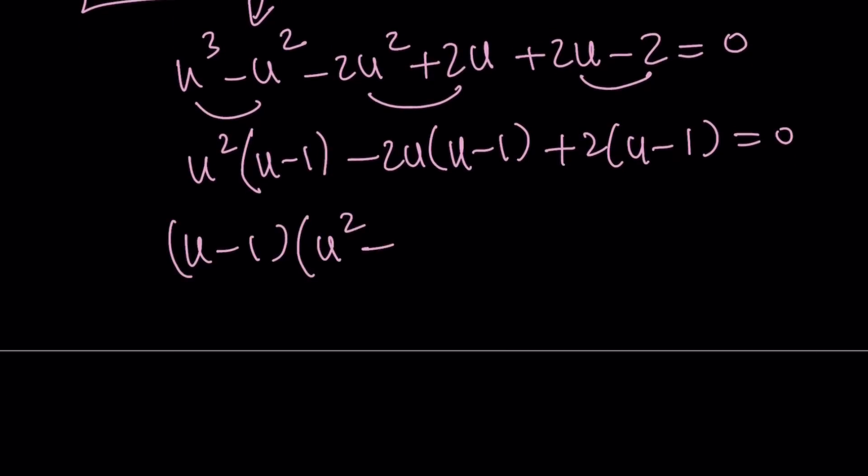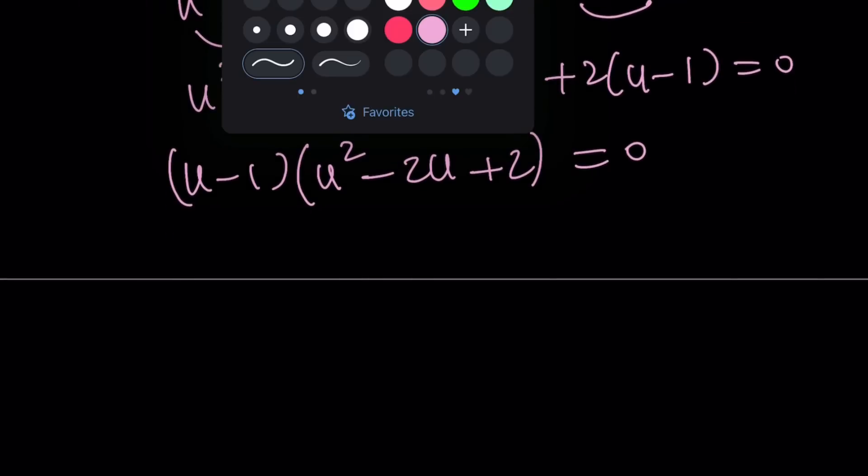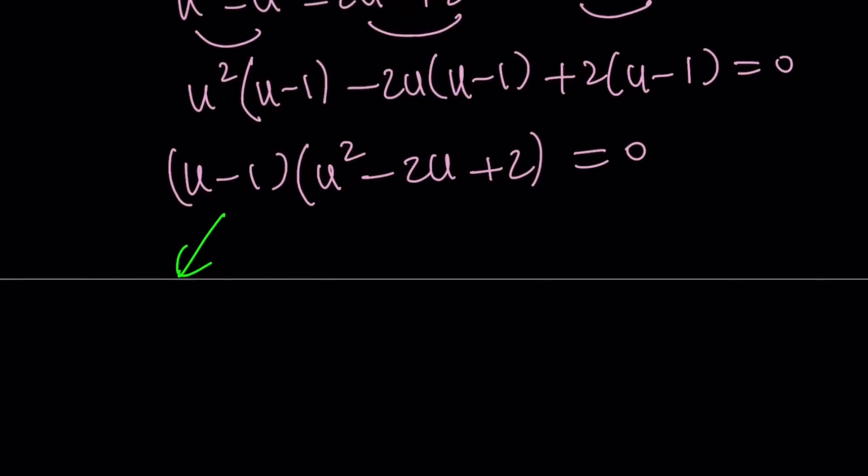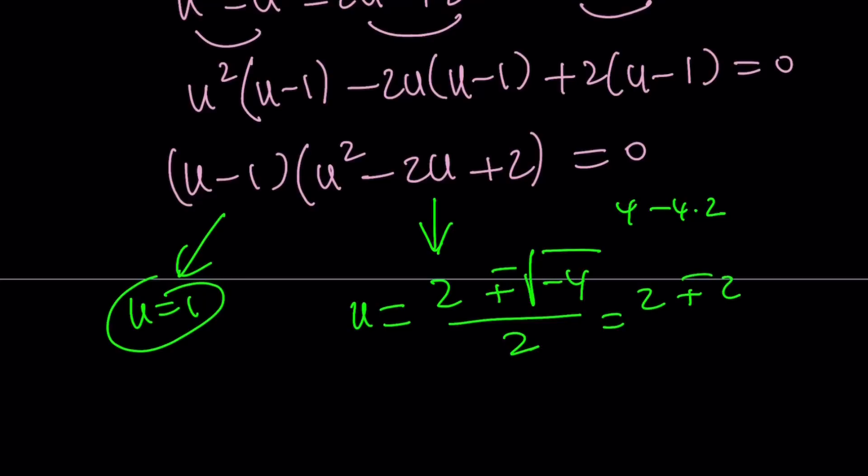So now we got it down to a linear times a quadratic, which is nice because quadratics are easy to solve. We have a quadratic formula. We also have a cubic formula, but come on. Who wants to use a cubic formula for this? So now we're going to do the following. We already know u = 1 is a solution. We're going to find the other two solutions by using the quadratic formula. So quadratic formula gives us negative b plus minus the square root of b² - 4ac, which is 4 minus 4 times 2, which is 4 minus 8, which is negative 4. And the square root of negative 4 is just going to be plus minus 2i. So we can write this as 2 ± 2i over 2. And that is going to turn into 1 ± i.